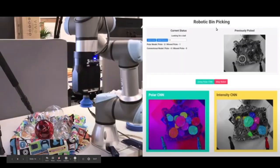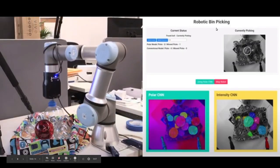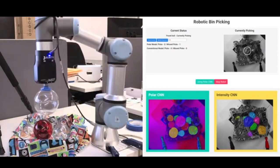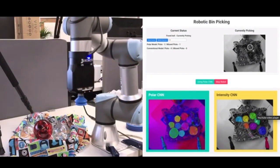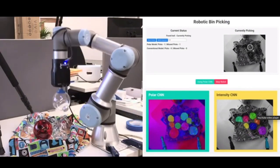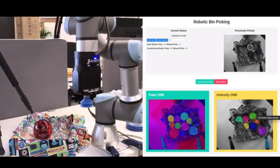Finally, we actually set up a system to do robotic bin picking of transparent objects in a clutter. Again, details are in the paper, but the key takeaway is that our segmentation is much better than that when you use regular intensity CNNs, and therefore we're able to pick an entire bin of transparent objects completely clean.